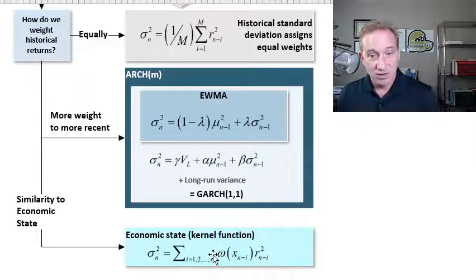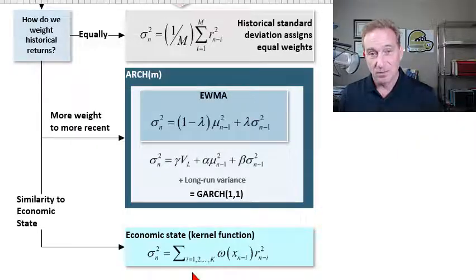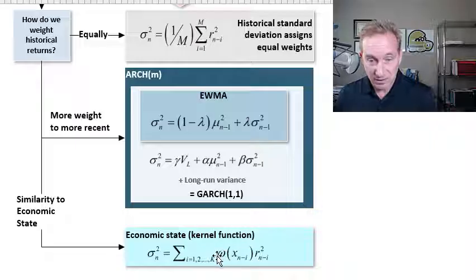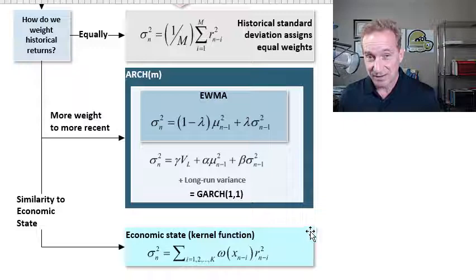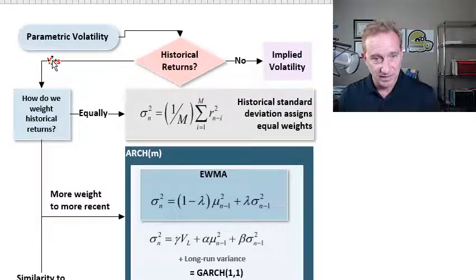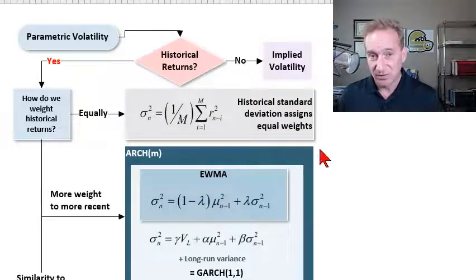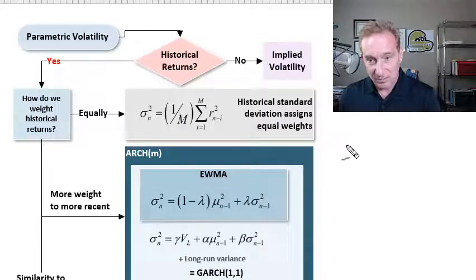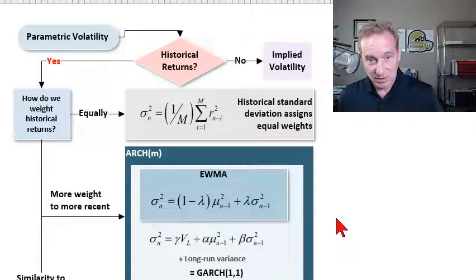In the kernel function, it's not about time, which is a simple rule. It's customized via our kernel function to the similarity of the past to today. That makes a lot of logical sense. That's the schematic for parametric volatility, all of which gets to that single question: what's the best estimate of today's volatility or variance? In turn, that parametric volatility is a parameter in our parametric approach, which is just one of the three approaches to Value at Risk.